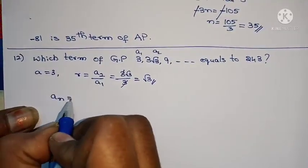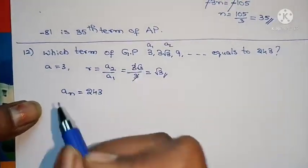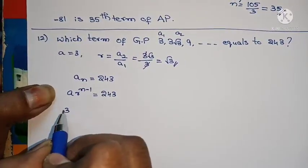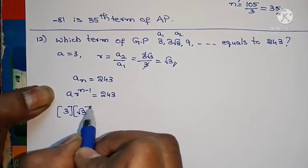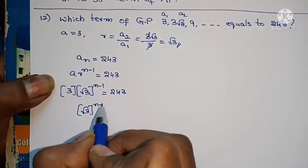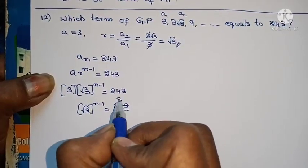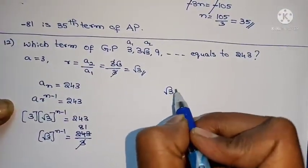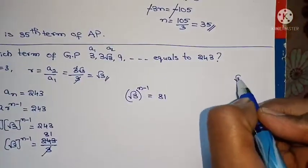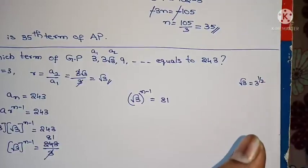For GP, the formula for the nth term An equals A times r^(n-1). We need An to equal 243. Substituting: 3 times (√3)^(n-1) equals 243. So (√3)^(n-1) equals 243 by 3 equals 81. Now, √3 is nothing but 3^(1/2).